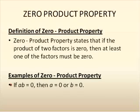You can see an example here. In general, if a times b is equal to zero, then either a or b would have to be zero, or they both could be.